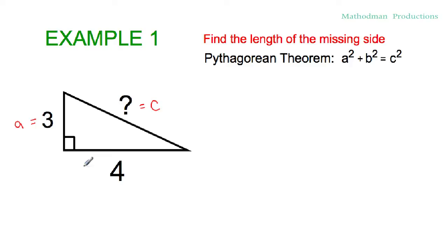It doesn't matter which one you label a and b, it's going to come out to be the same thing. So here is where my students always make a mistake. They forget to square the numbers, so I always tell them to just put parentheses with the square symbol right there.